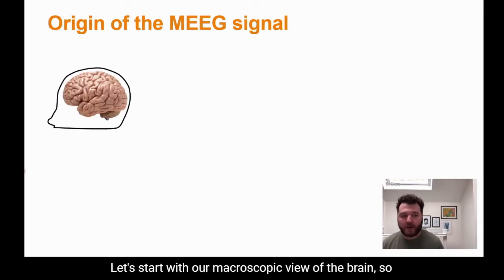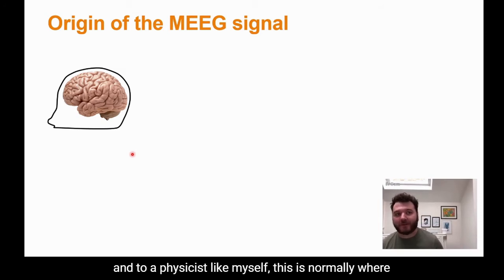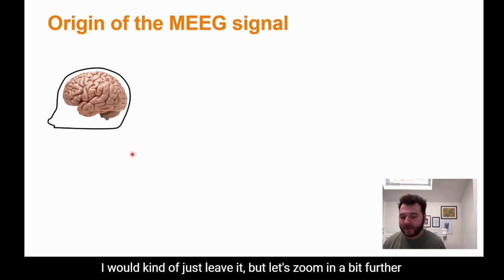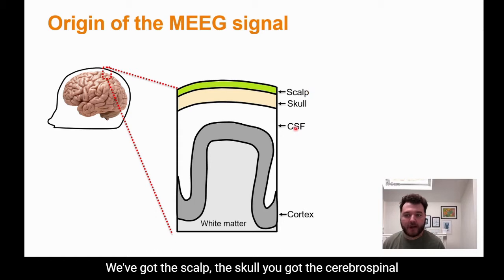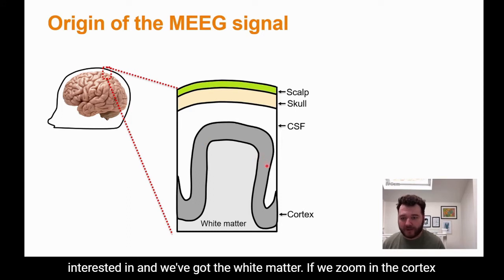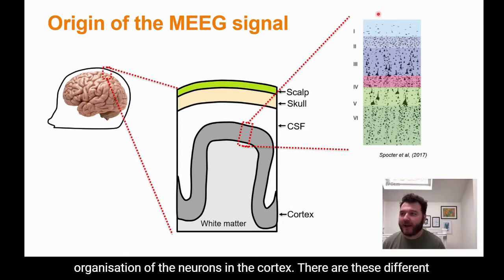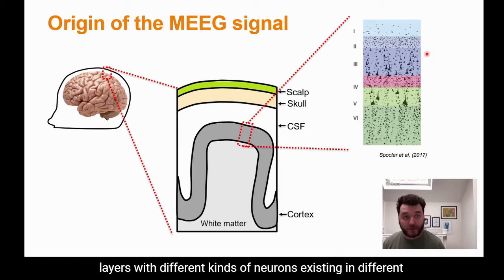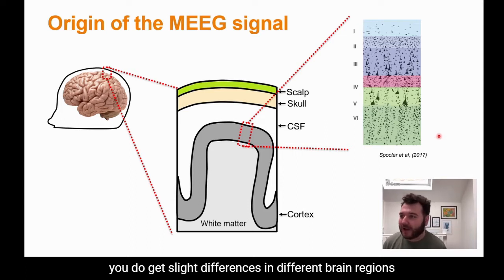Starting with a macroscopic view of the brain and skull, if we zoom into a mesoscopic scale we can see multiple different parts: the scalp, the skull, the cerebrospinal fluid in which the brain is suspended, the cerebral cortex — which is what we're primarily interested in — and the white matter. Zooming further into the cortex, we see a stereotypical organisation of neurons in different layers, which varies slightly across brain regions. This is known as the cortical column.